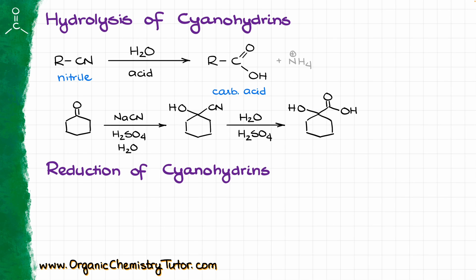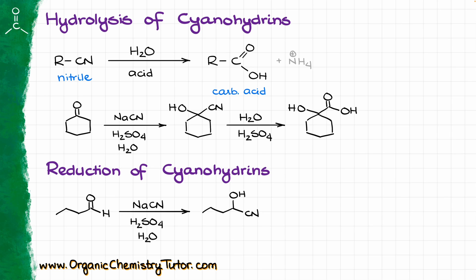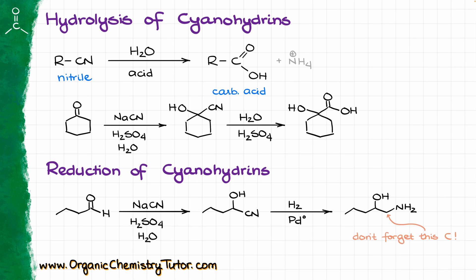Another cool use for cyanohydrins in synthesis is their ability to give amino alcohols after reduction of the nitrile functional group. For instance, if I took butanal and converted it into the corresponding cyanohydrin, I can reduce that nitrile all the way down to the primary amine. While there are other methods to make the same combination of functional groups, this one is a very clean, simple, and straightforward methodology. Since simple aldehydes and ketones are commercially available and quite cheap, this type of chemistry makes a good starting point for many complex synthetic schemes. The cyanohydrin synthesis offers a lot of versatility and is definitely something to keep in your synthetic toolkit.